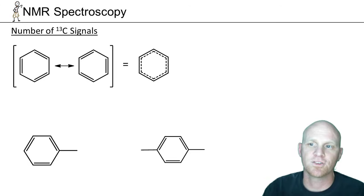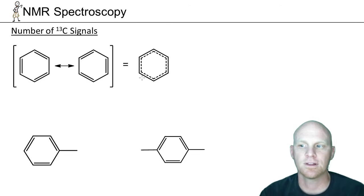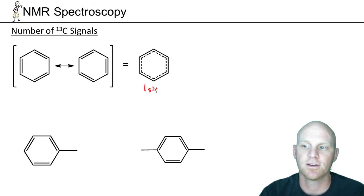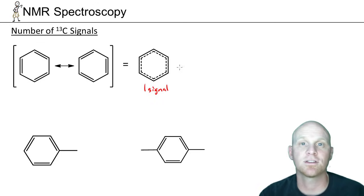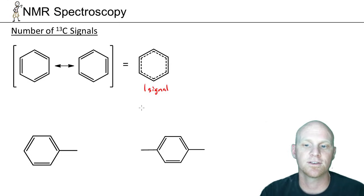Looking at benzene, we draw two different resonance structures, but we should keep in mind that there is electron delocalization all the way around the ring. As a result, every single carbon in benzene is equivalent, and there's only going to be a single signal. You can rotate benzene 60 degrees and it looks exactly the same each time, so everything 60 degrees apart is chemically equivalent, giving rise to only one signal.